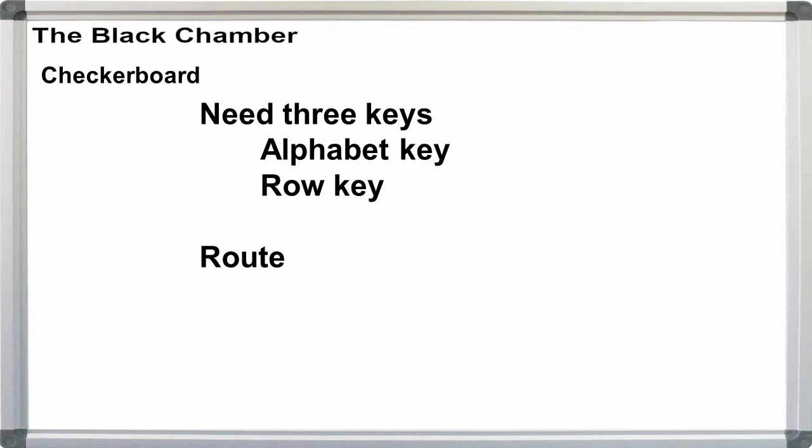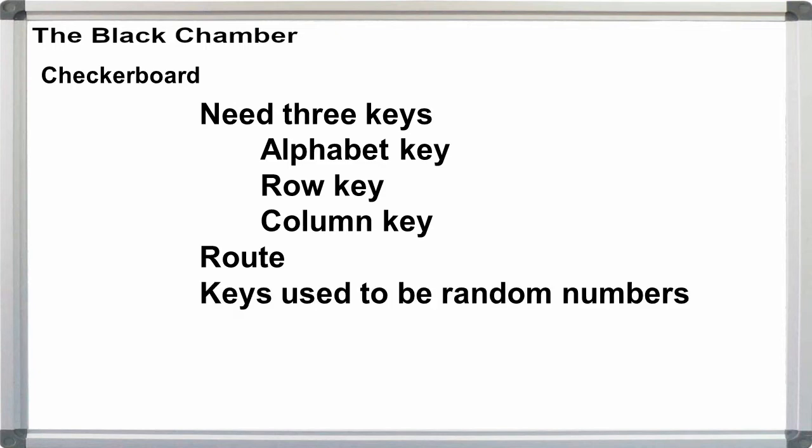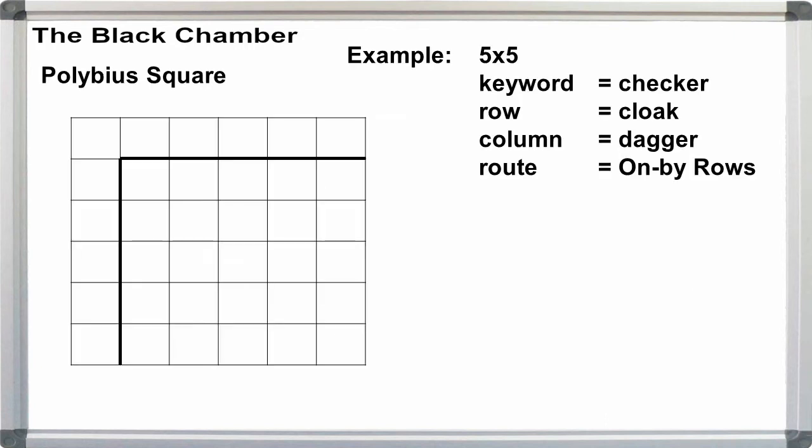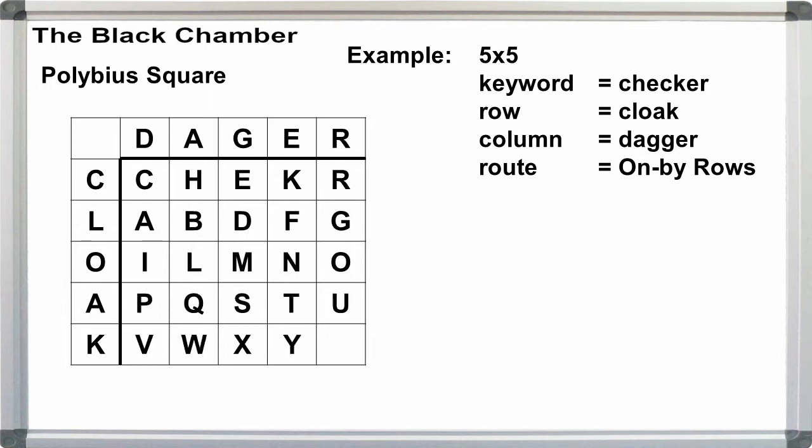The first keyword will be for our keyed alphabet as before. The other two will be our row and column indicators. Originally, Checkerboard used randomized 5- or 6-digit numbers, depending on the square size, such as 31524 or 654321. Currently, the ACA guidelines call for 5- or 6-letter words. We could allow for repeating letters, but that makes decryption much more clunky for the receiver. The Black Chamber advocates for no repeating letters. Using Checker for our keyed alphabet, Cloak for our row keyword, and Dagger for our column keyword, and on by rows, we have the following table, and we're done.